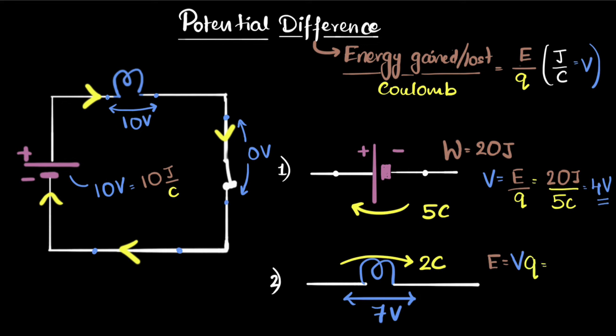That gives us seven, seven volt times two, giving us 14, 14 what? 14 joules. So 14 joules of energy was transferred.